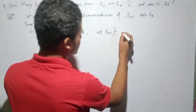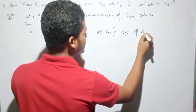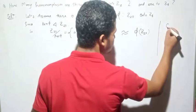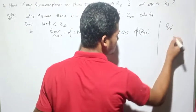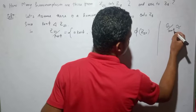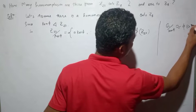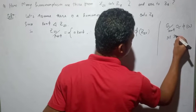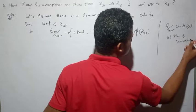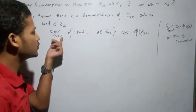Z20 by kernel of φ is isomorphic to φ(Z20). This follows from the First Isomorphism Theorem. From the First Isomorphism Theorem, we have that Z20 by kernel of φ is isomorphic to φ(Z20).